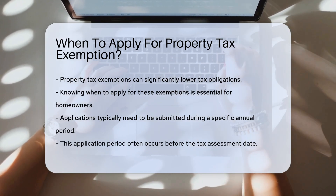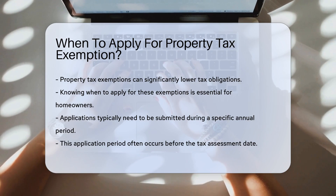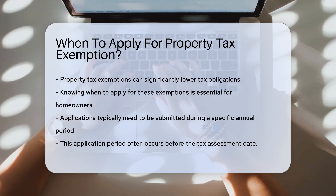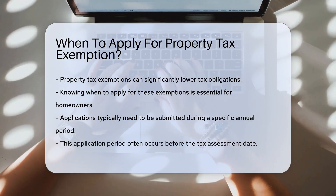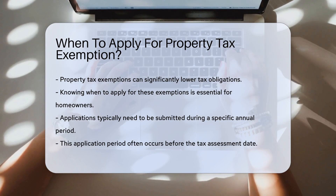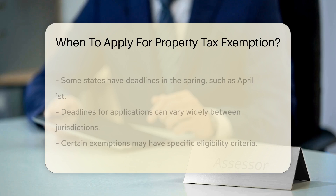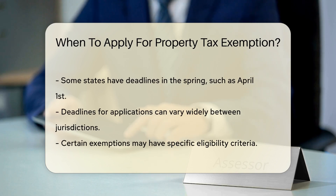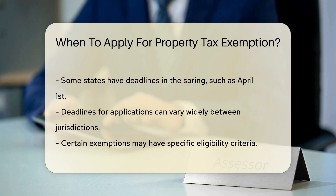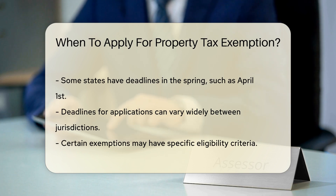Many jurisdictions have specific deadlines for applications. Generally, property tax exemption applications must be submitted during a designated period each year. This period often occurs before the tax assessment date. Some states require applications to be filed by a certain date in the spring — for example, in some areas, the deadline may fall on April 1st. However, other jurisdictions may have different timelines. It is essential to check local regulations to know the exact dates.